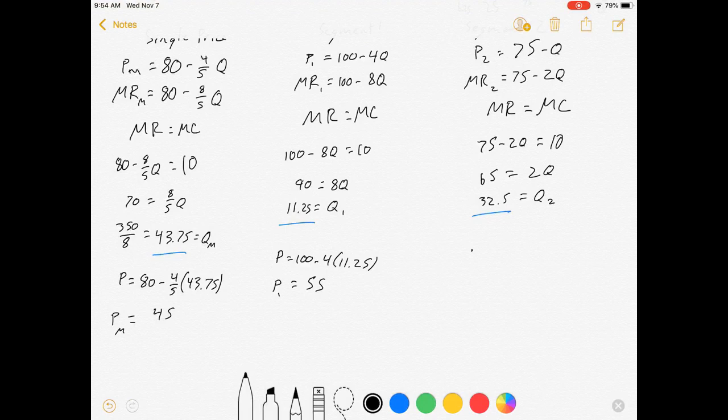And price equals 75 minus Q, 32.5, which means price is equal to 42.5. So now we've solved for all their different prices.